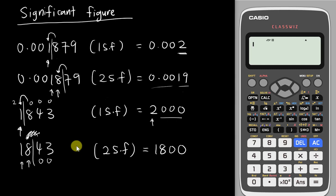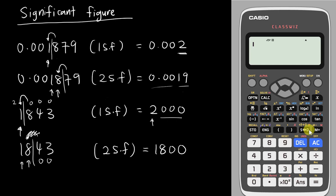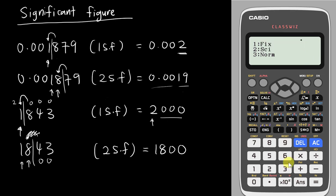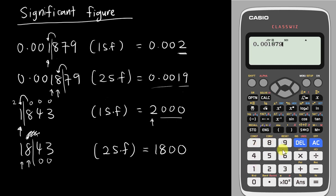If I want my calculator to do this job for me, this new calculator can do it easily. Go into the Shift menu, look for Number Format which is number 3, then look for Significant Figures which is number 2, and the calculator will ask how many Significant Figures you want. In this case I want 1 Significant Figure, so I type 1. Then I insert the number 0.001879 and press Enter.